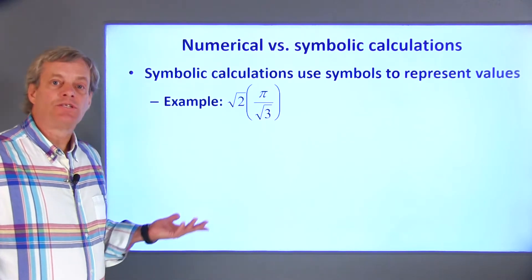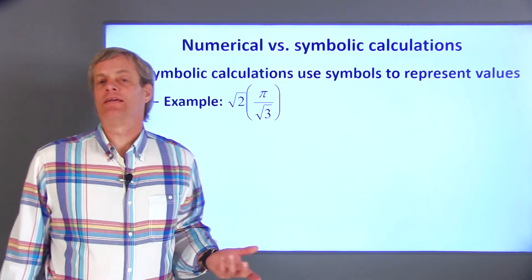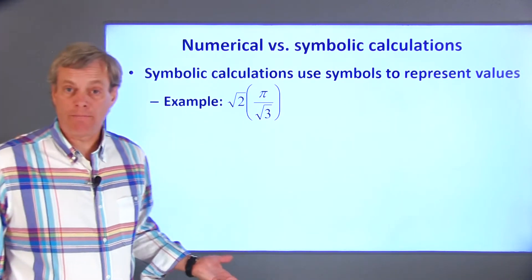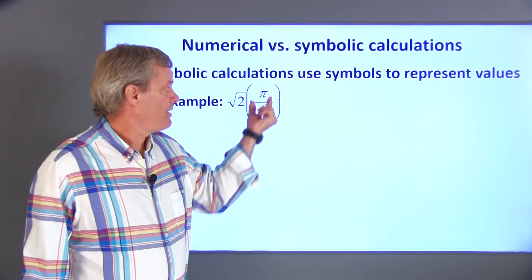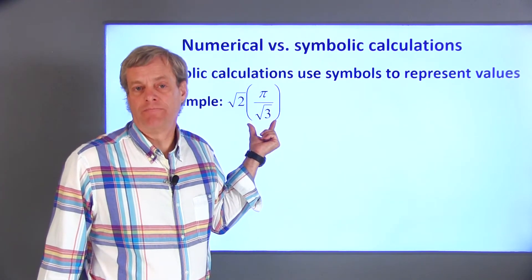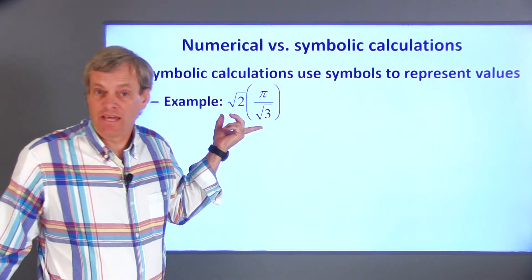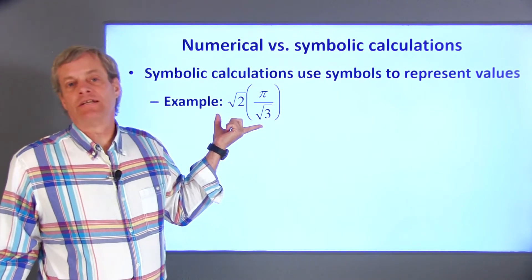Symbolic calculations include symbols as well as numerical values. For example, a symbolic expression might be the square root of 2 times pi divided by the square root of 3. Granted, this is officially a number, but it's represented in terms of symbols.